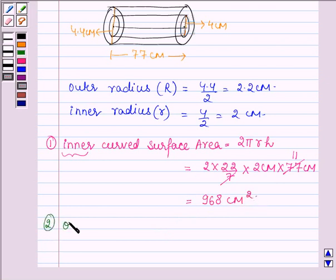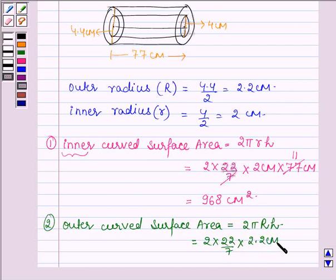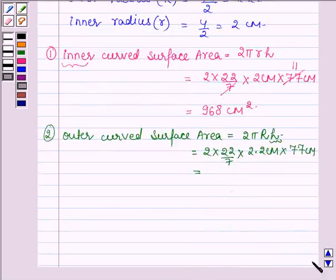Now let us find the outer curved surface area. This equals 2π × capital R × H. Substituting values: 2 × (22/7) × 2.2 × 77 = 1064.8 cm².